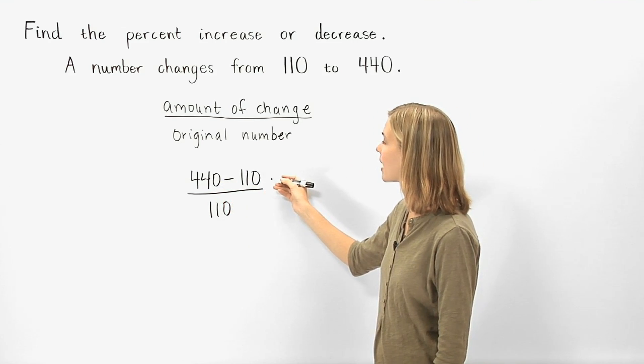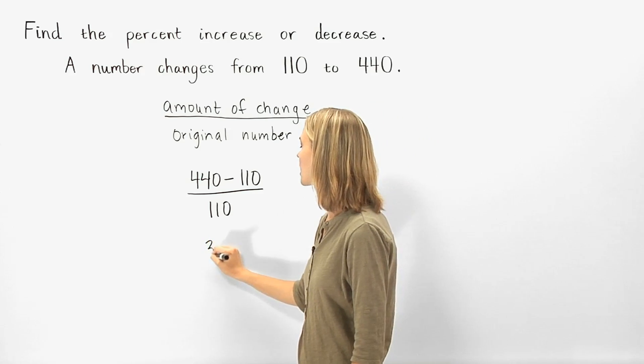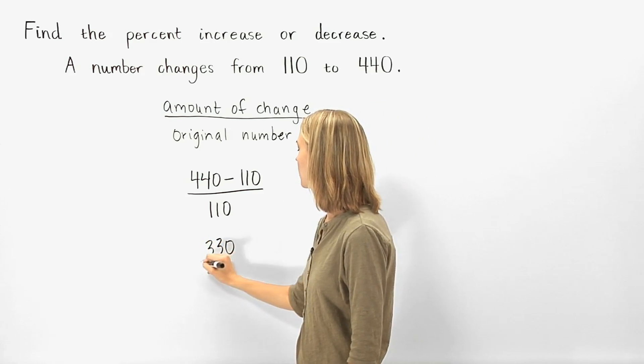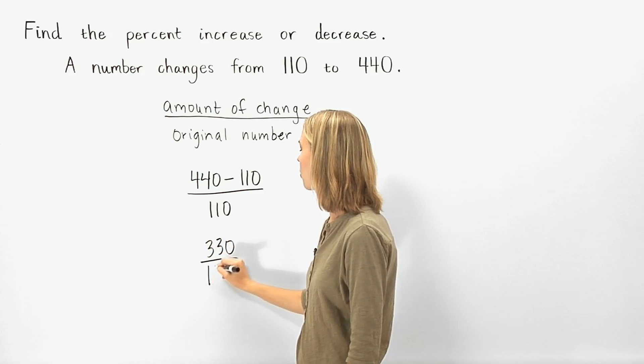So 440 minus 110 is 330, and we have 330 over 110.